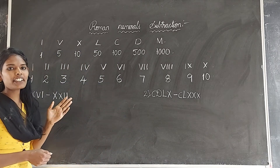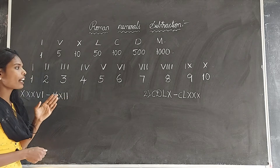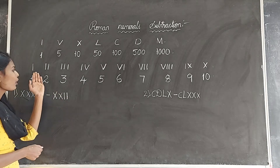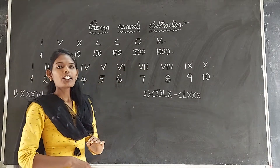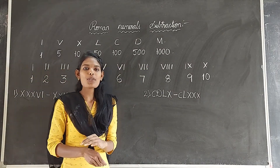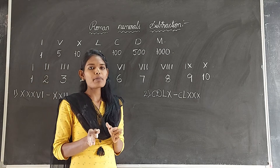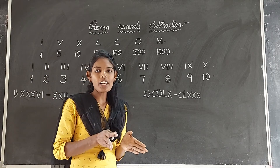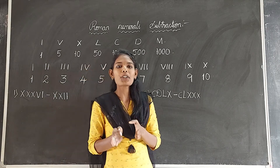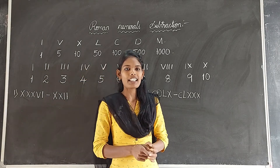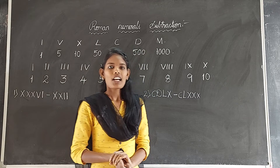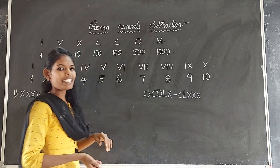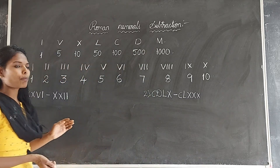And here we have the numbers from 1 to 10. Using these symbols and values, we are going to separate the Roman numerals. Let's see the examples.